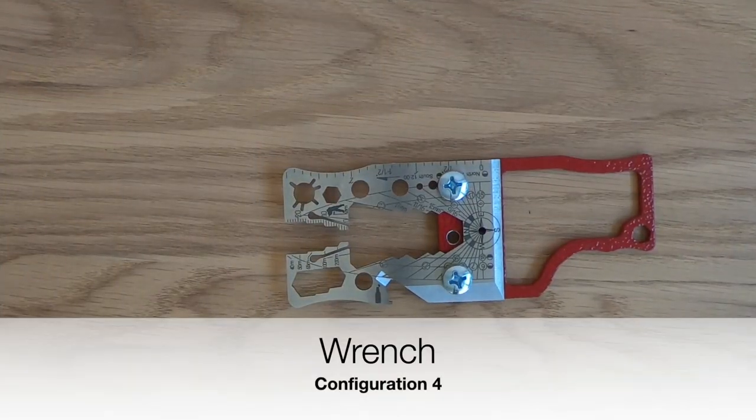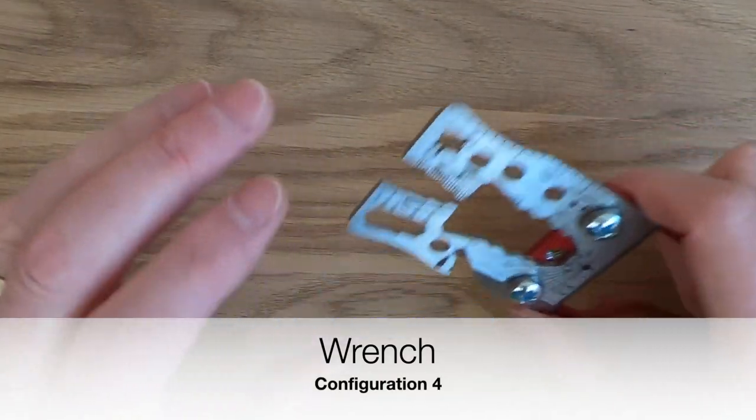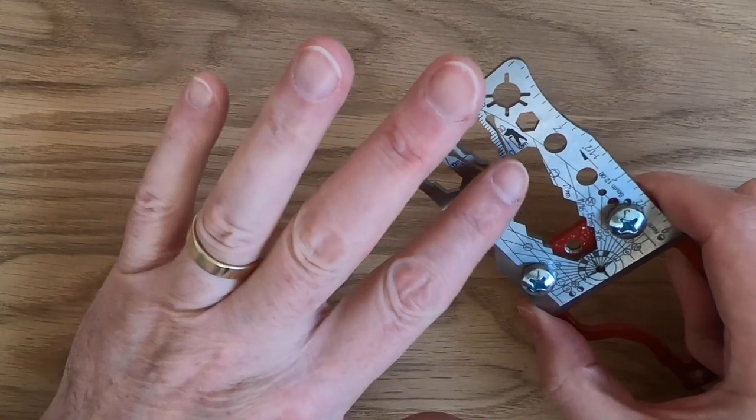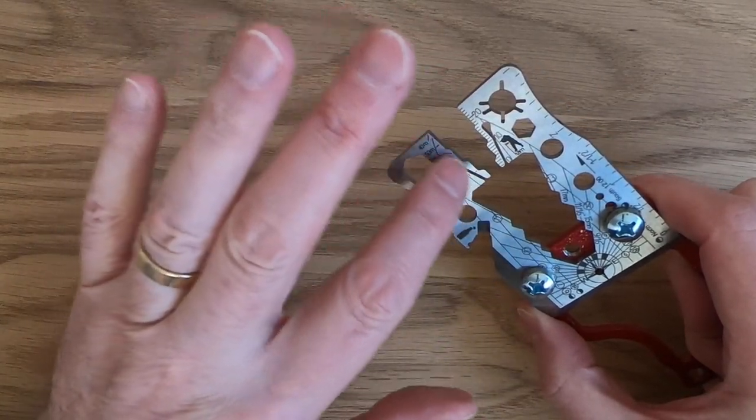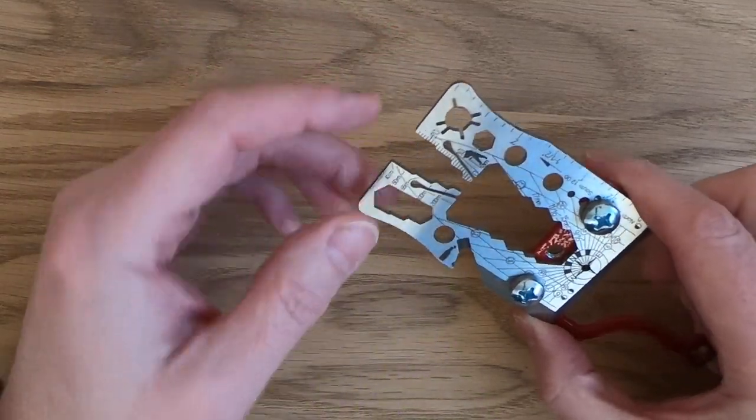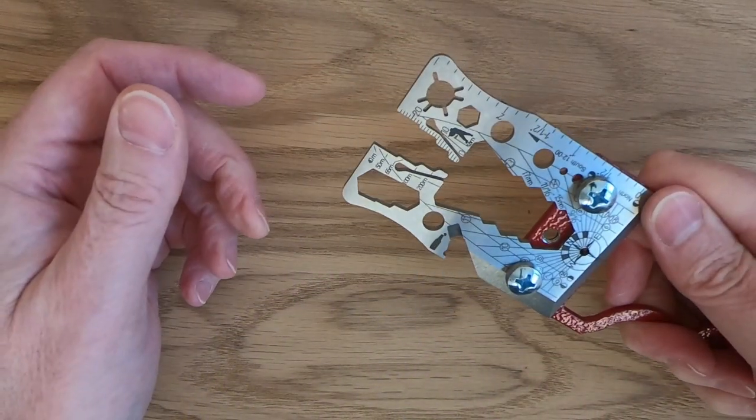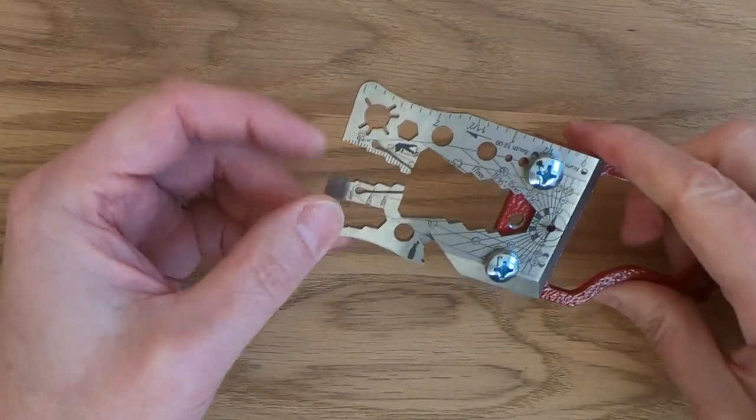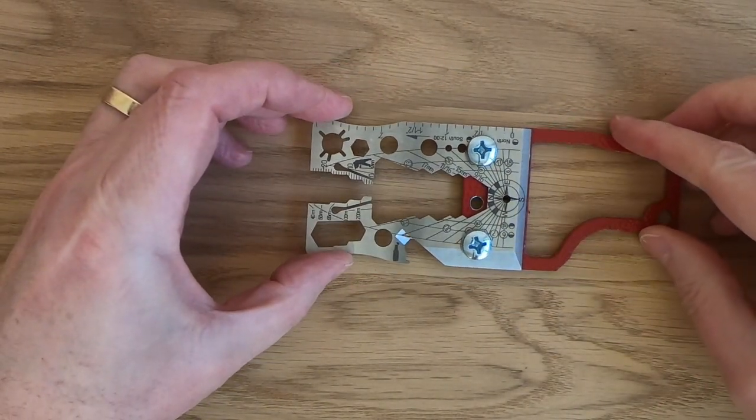Next up we have the wrench assembly. As you can see, we've got all these little cutouts here. We've actually got the sizings on there as well. There's a broadhead wrench there, a couple of other little holes that you can use for wrenches. This is so you can get a nice purchase on there and get some additional leverage when you're doing up or undoing some wrenches. So that's the wrench assembly.